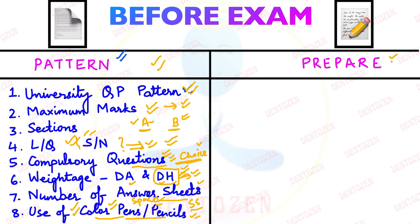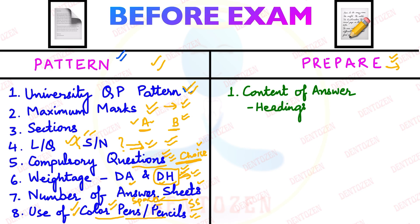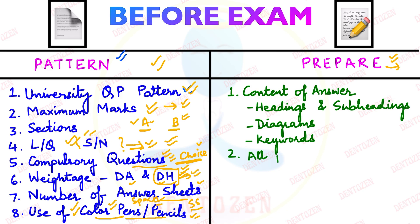Now let's see how to prepare according to the pattern. Since you already know the pattern, you can plan your answers well before your final exam, so you don't waste time during the exam thinking what to write. You should have planned the content of all your answers — headings, subheadings, which diagrams to make, and important keywords to highlight. You should also have covered all previous question papers for long questions and short notes, because most are repeated.